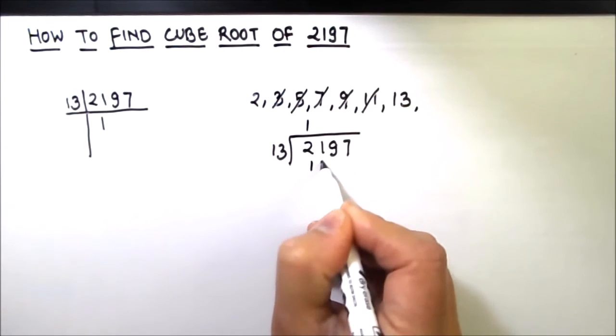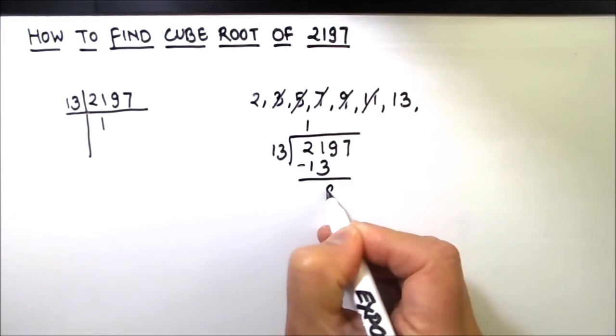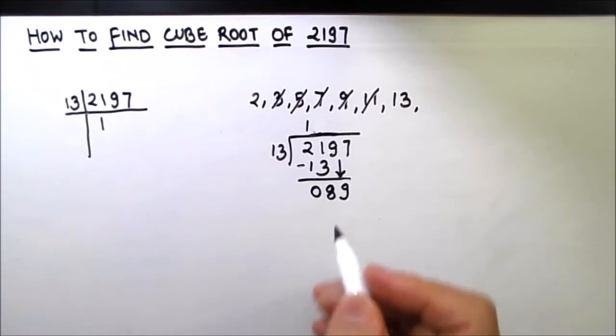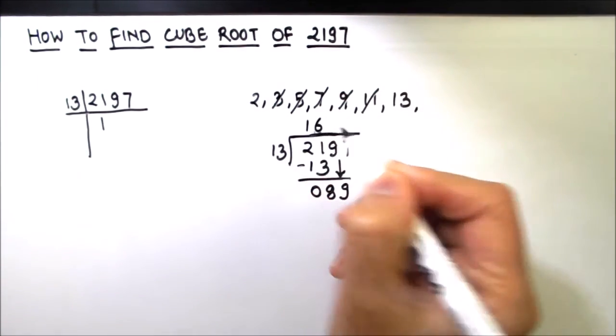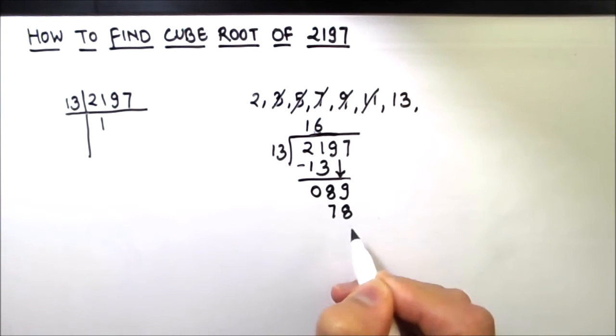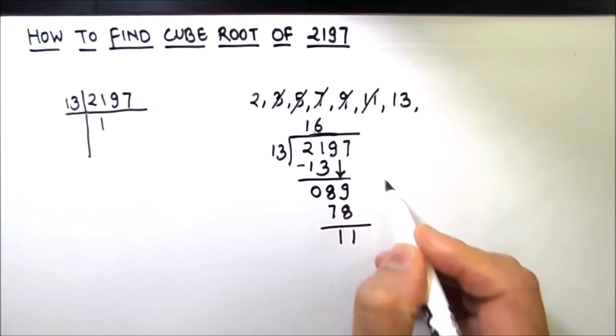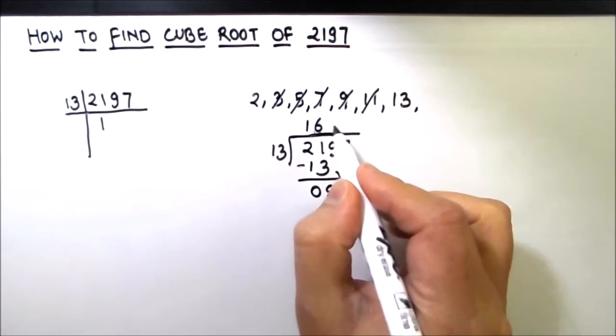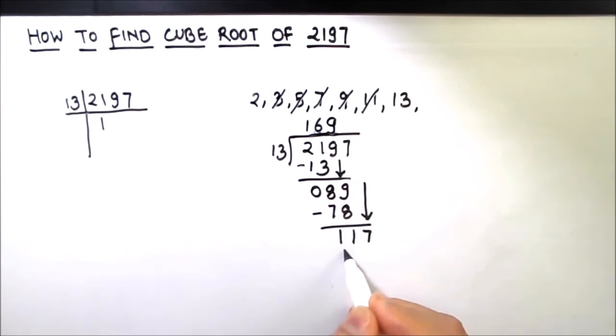So 13 times 1 is 13. We have 8 as our remainder. Then we will drop down 9. So 13 times 6 is 78. Now we will subtract this. This is 1, and then we will drop down 7. 117. So this is 117 and 13 times 9 is 117.